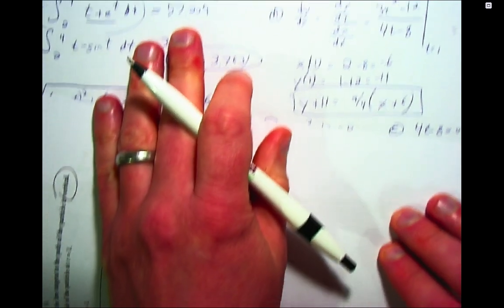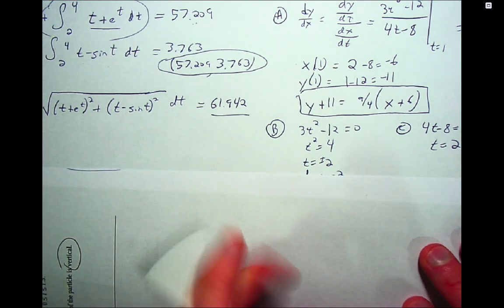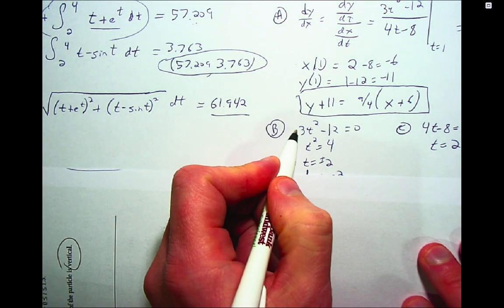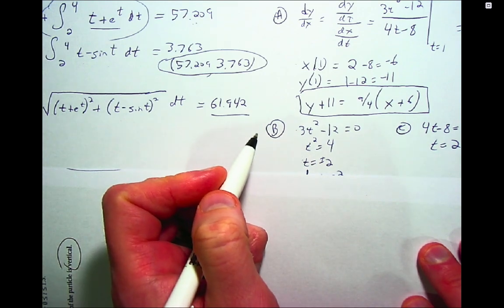Where is the tangent line horizontal? Well, when the derivative is 0. When is the derivative 0? When the numerator is 0. So we set dy/dt equal to 0, get two values, t equals plus or minus 2.